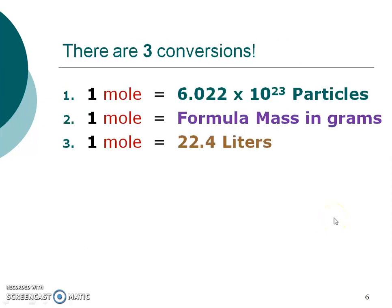So these are the three conversions we're dealing with. They all equal one mole — that's really going to be important for conversions, and the one always goes with the mole. For particles and liters, we have a set number. However, when we're dealing with mass in grams, we're going to have to figure out that number first. We have to figure out that mass in order to use it in our conversion.